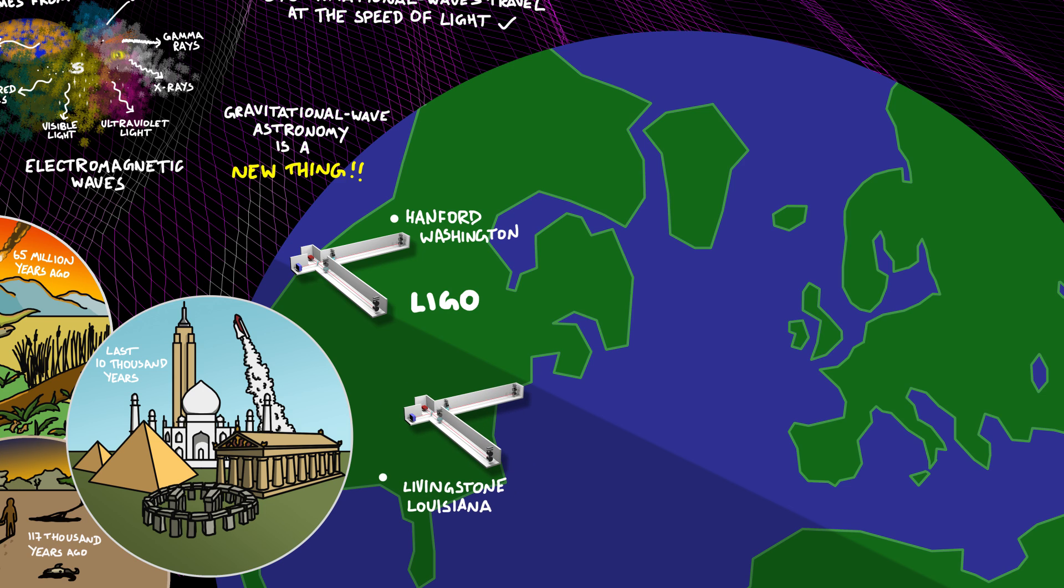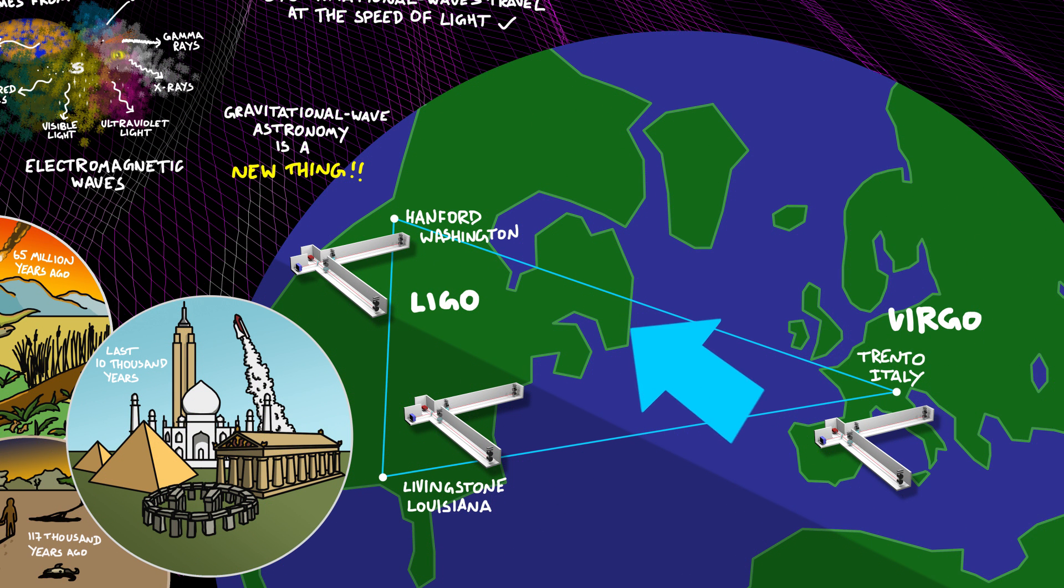Having several detectors on Earth means that scientists can verify a signal from space by seeing if it appears at all of the different detectors. And they're far apart because it means that they can see roughly in what direction the wave is coming from by triangulating the signal. Even with these waves travelling at light speed, there's a delay of a few milliseconds between each of the detectors.